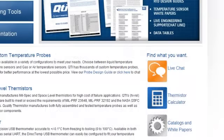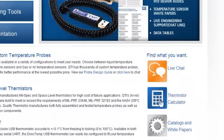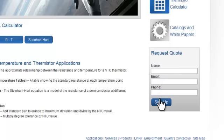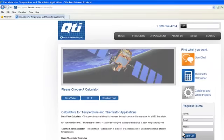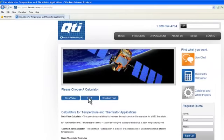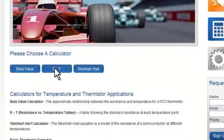To use the calculator, start by clicking on any of the thermistor calculator icons. To find the resistance versus temperature information, click on the RT table button.